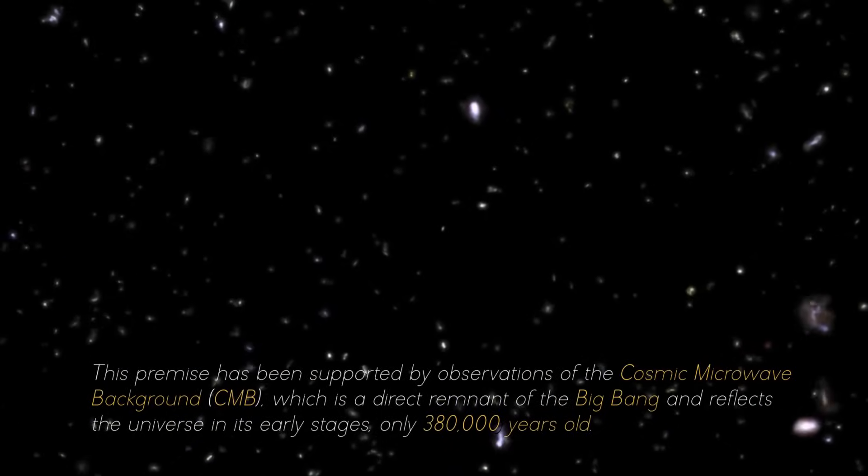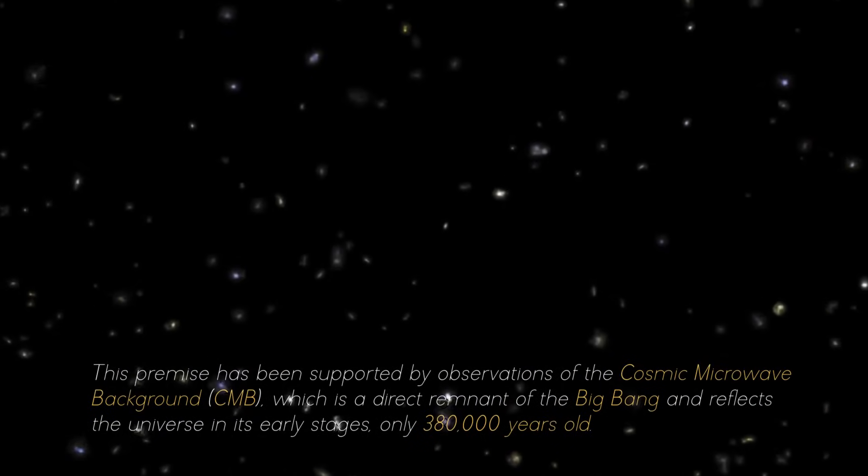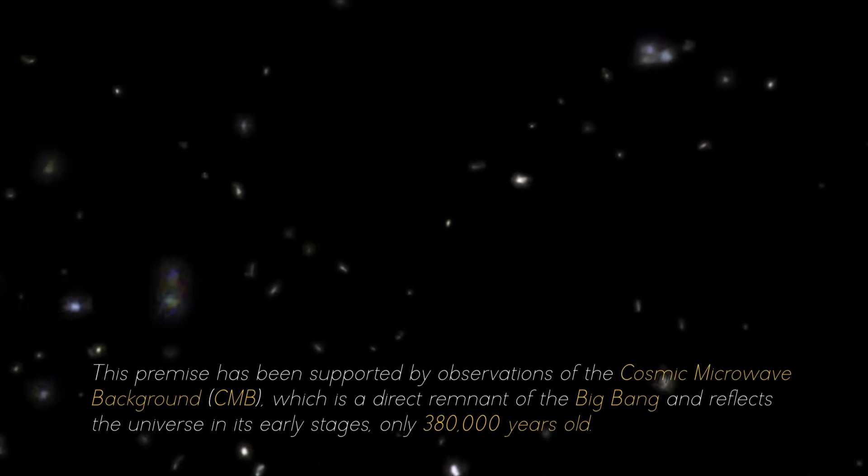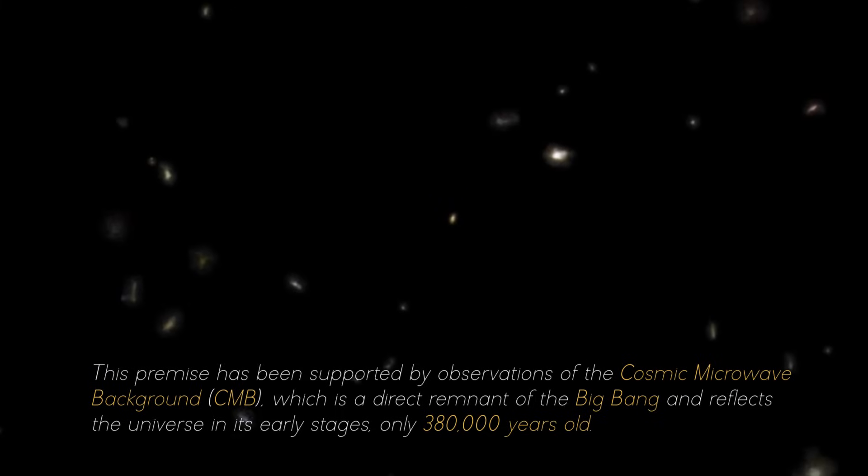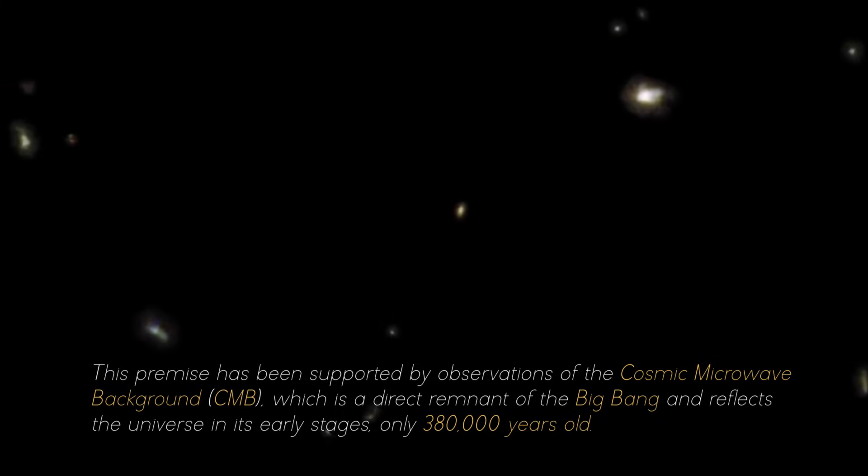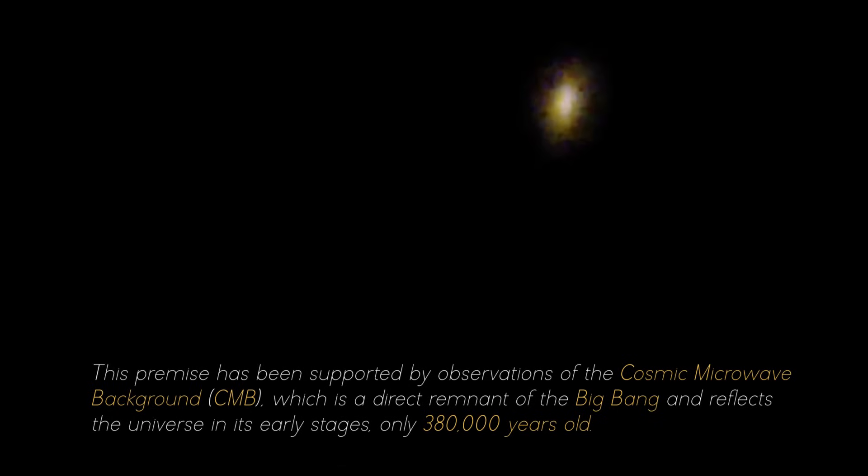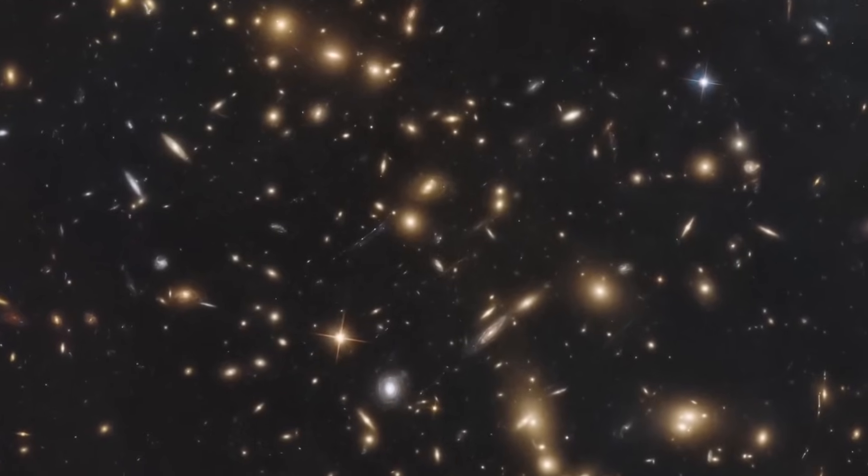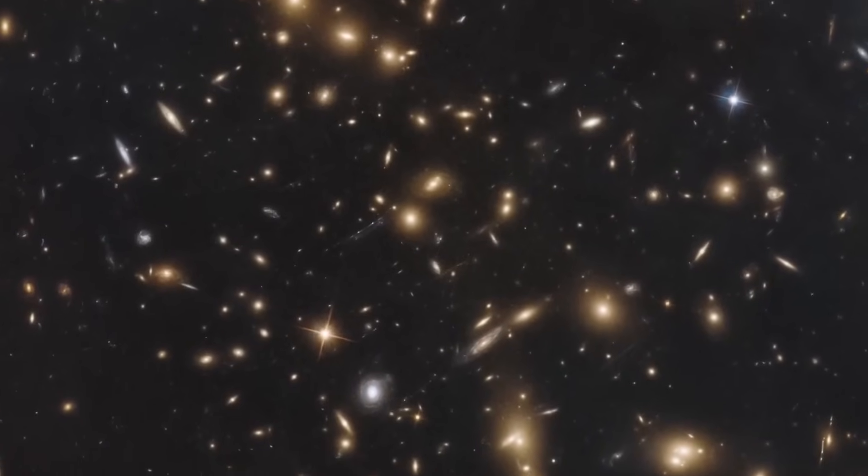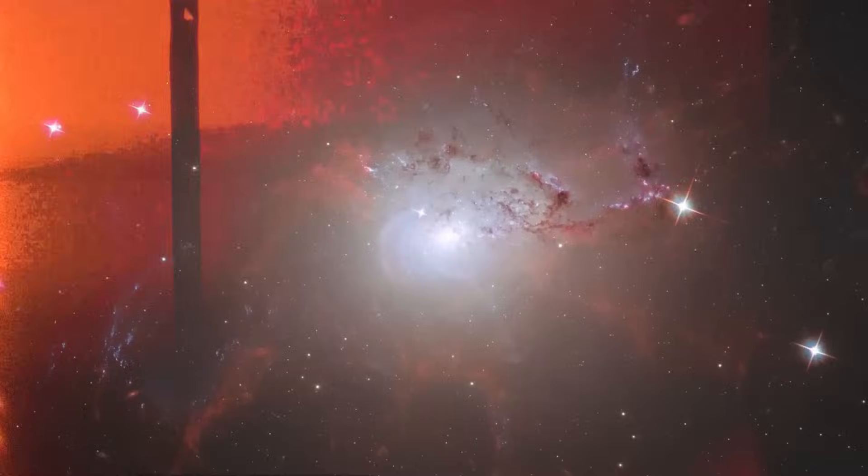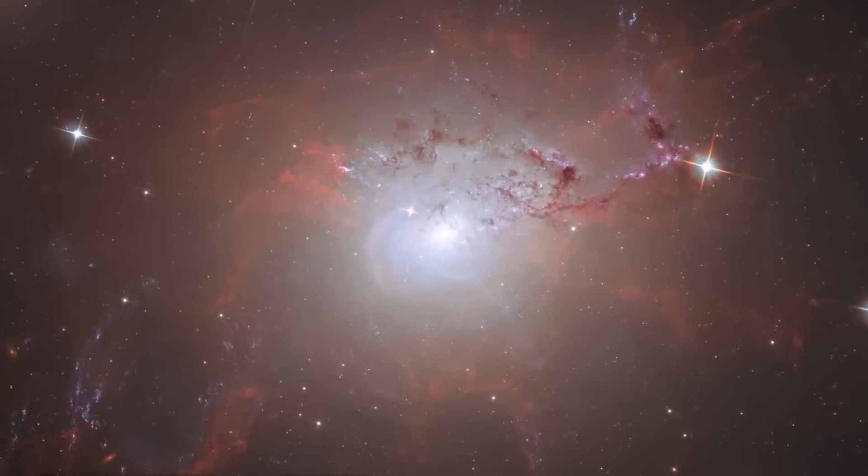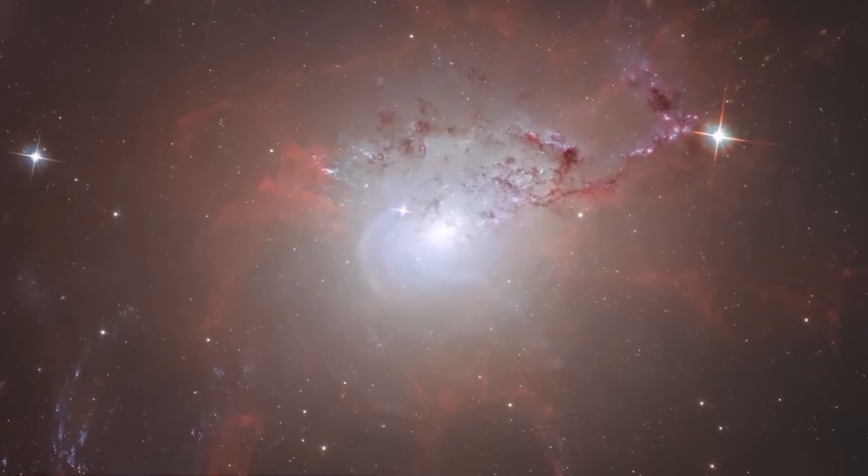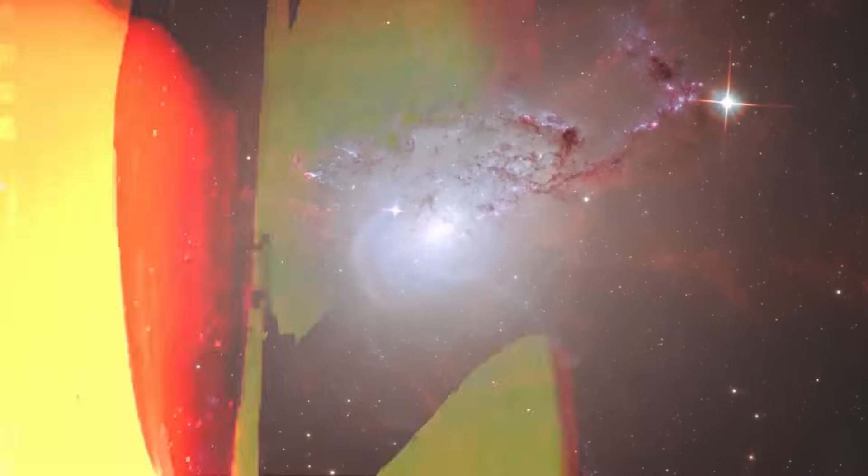This premise has been supported by observations of the Cosmic Microwave Background, which is a direct remnant of the Big Bang and reflects the universe in its early stages. The uniform distribution of the CMB across the sky implies that the universe expanded rapidly and uniformly in all directions in those early times. However, in today's universe, this may not be true.